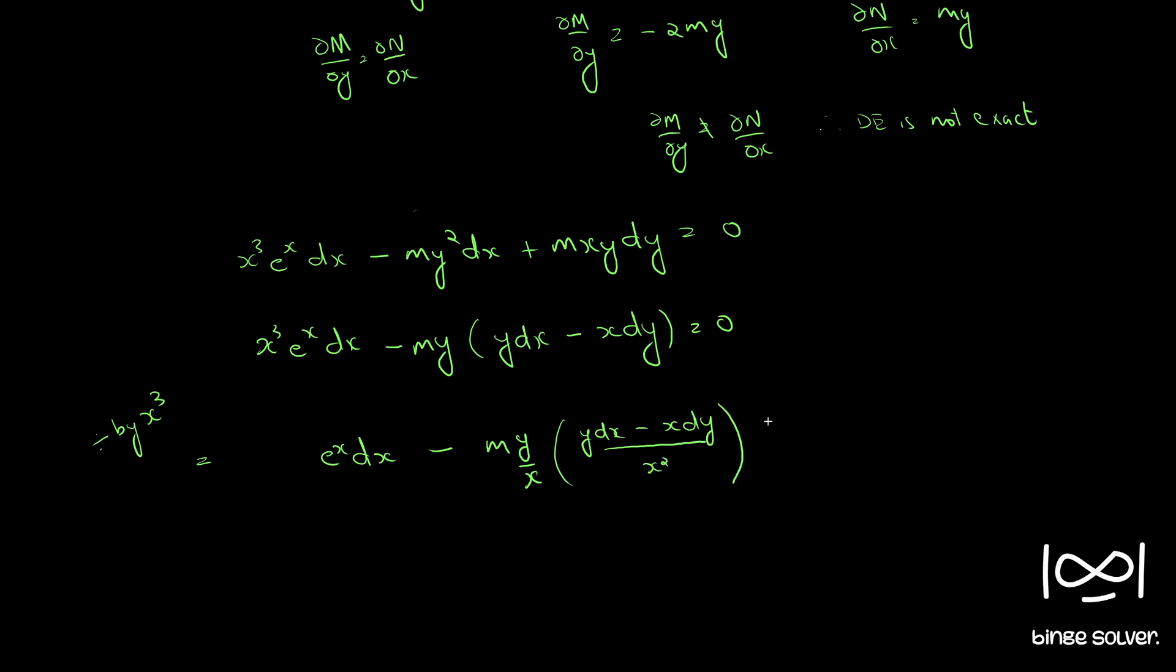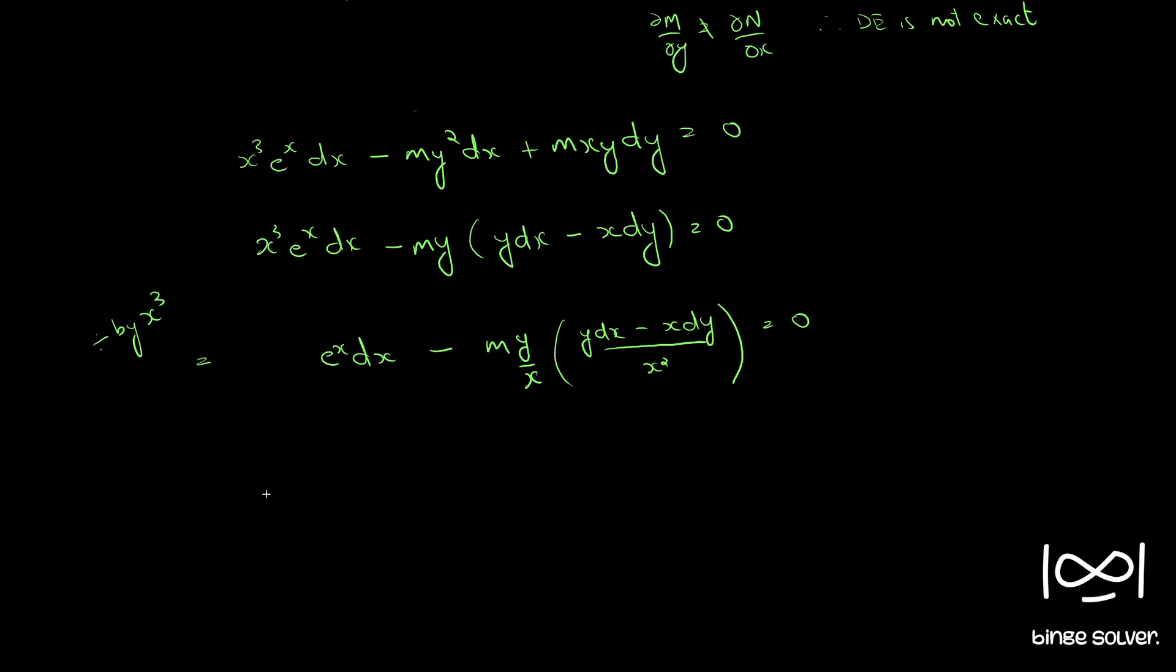We can write this as differential of e raised to x, which is e raised to x dx, minus m y by x into d of y by x. Since dy by x is x dy minus y dx, and we have y dx minus x dy, we add a minus sign. This equals 0.